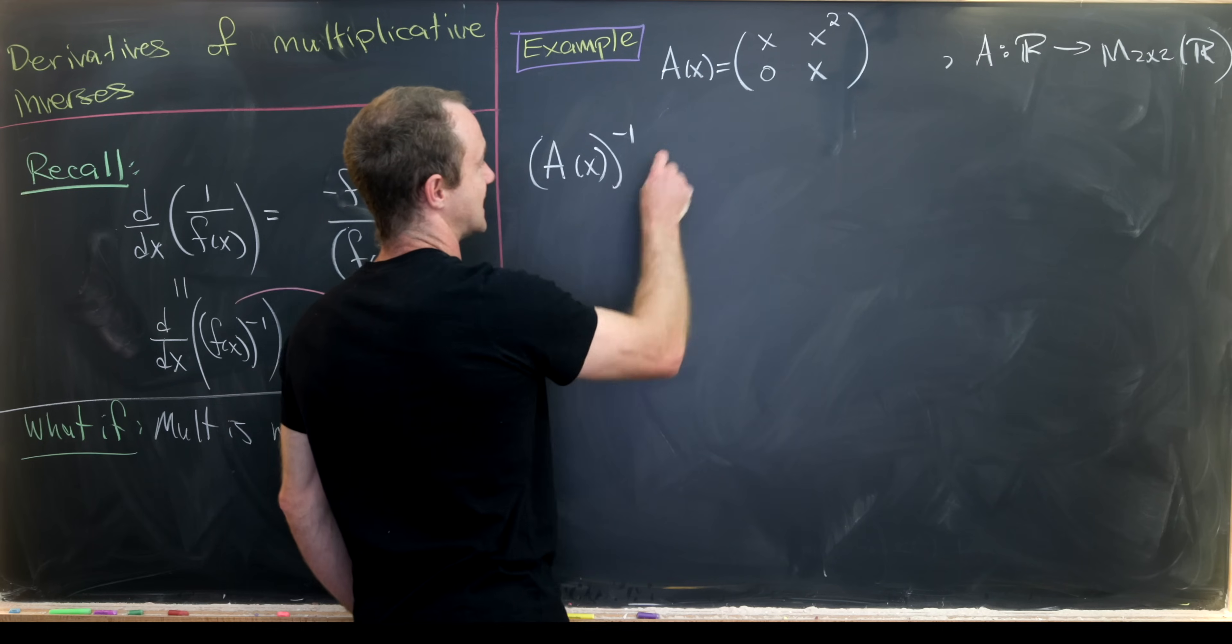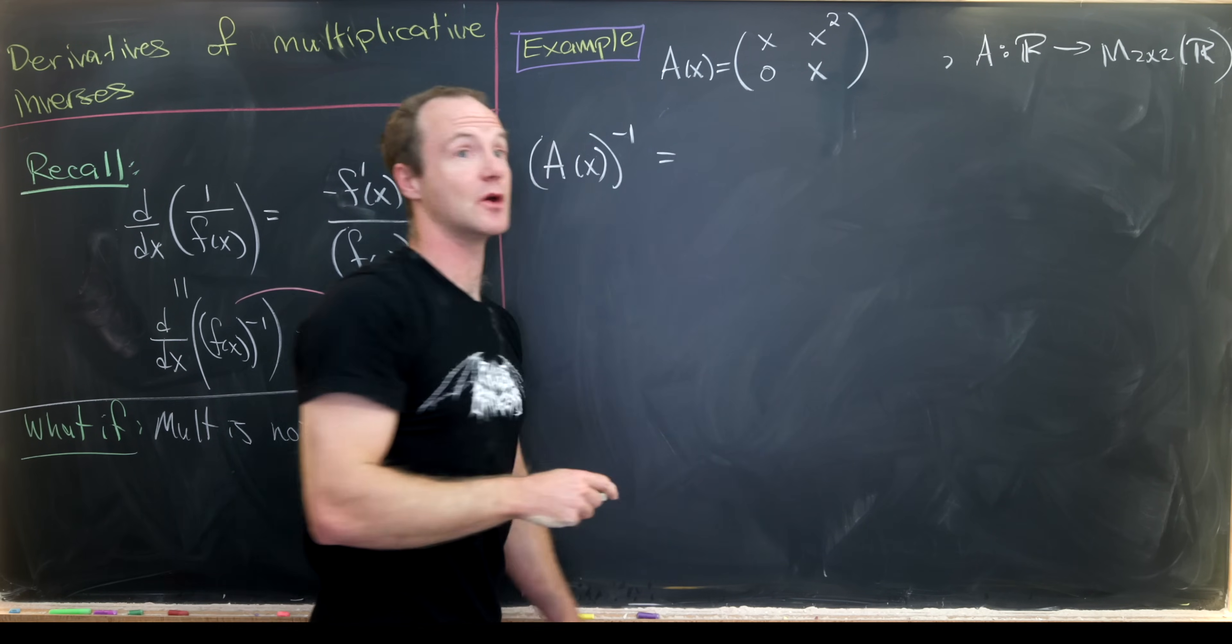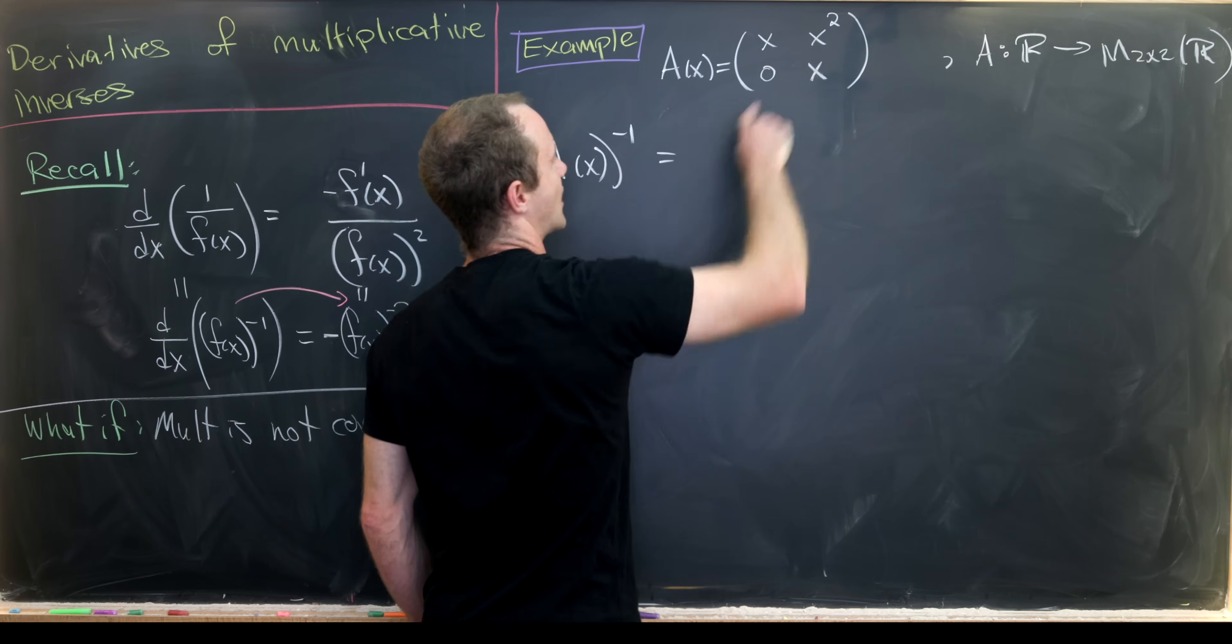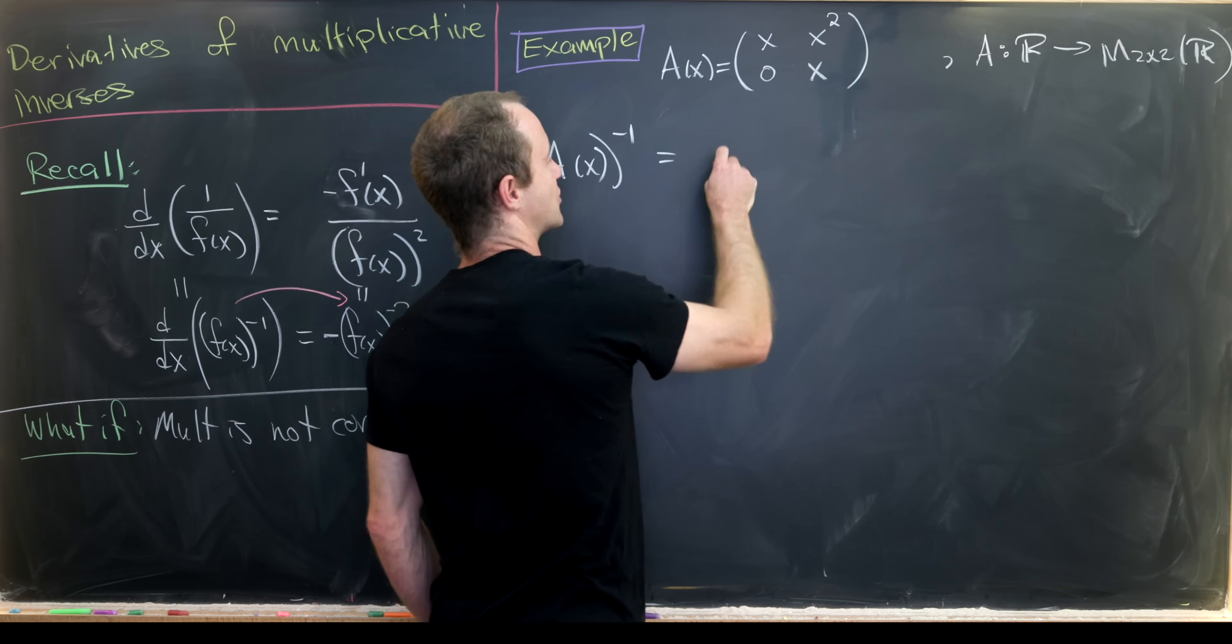A(x) inverse is equal to 1 over the determinant. But notice the determinant is just the product of the diagonals, given this is an upper triangular matrix, so the determinant is x squared.